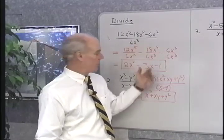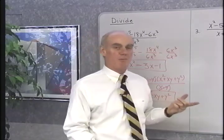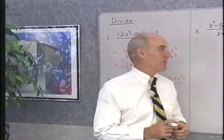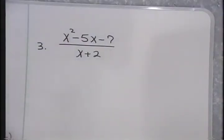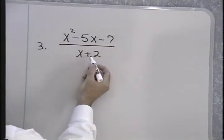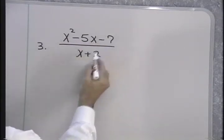So, here's division by a monomial, here's division by a binomial where the numerator is factorable. Let's go to another problem where we divide by a binomial, but the numerator isn't factorable. x squared minus 5x minus 7 divided by x plus 2. I can't use the method I used in the previous example because x plus 2 is not a factor of x squared minus 5x minus 7.